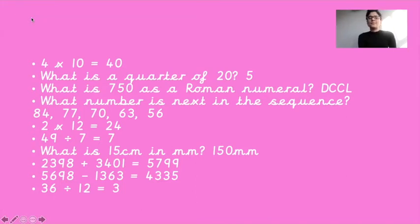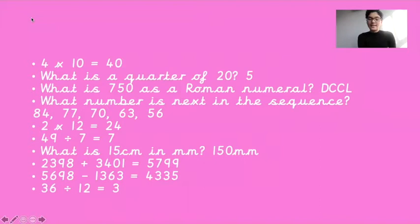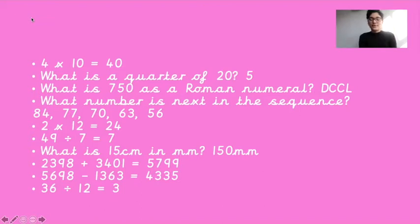What number is next in the sequence? 84, 77, 70, 63 — the answer is 56. 2 times 12 equals 24. 49 divided by 7 equals 7. What is 15 centimetres in millimetres? 150 millimetres. 2,398 plus 3,401 equals 5,799. 5,698 take away 1,363 equals 4,335. And lastly, 36 divided by 12 equals 3.